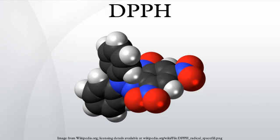DPPH is a common abbreviation for the organic chemical compound 2,2-diphenyl-1-picrylhydrazyl. It is a dark-colored crystalline powder composed of stable free radical molecules. DPPH has two major applications, both in laboratory research: one is as a monitor of chemical reactions involving radicals — most notably as a common antioxidant assay — and another is as a standard of the position and intensity of electron paramagnetic resonance signals.